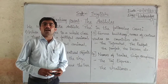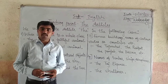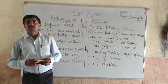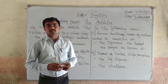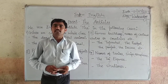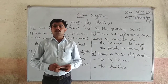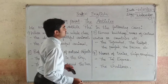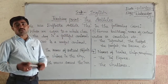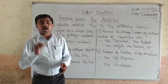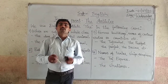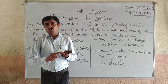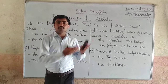In this English subject we are going to learn about articles — specifically A, An, and The. We use the article A before words beginning with consonants. For words beginning with a vowel or silent H, we use the article An.